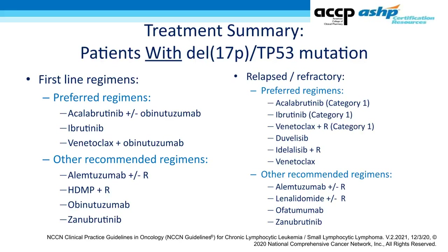For patients with deletion 17p, recommendations are not broken down by fitness for therapy — they apply regardless of age or comorbidities. First-line preferred regimens are acalabrutinib plus or minus obinutuzumab, ibrutinib, and venetoclax plus obinutuzumab; other recommended options include zanabrutinib. In the relapsed and refractory setting, the preferred regimens are the same — acalabrutinib, ibrutinib, and venetoclax, this time combined with rituximab — along with venetoclax as a single agent or either PI3K inhibitor.